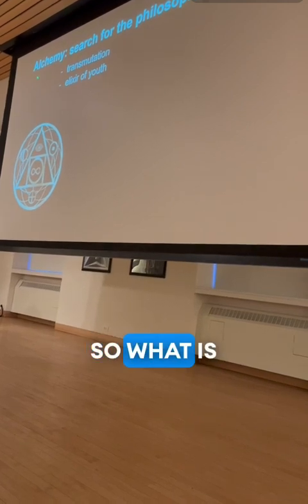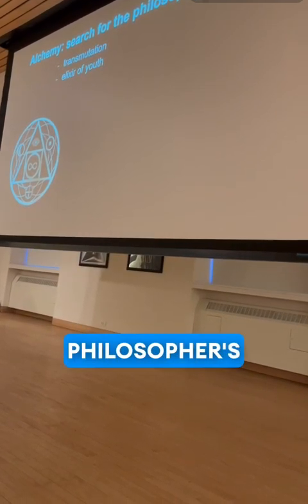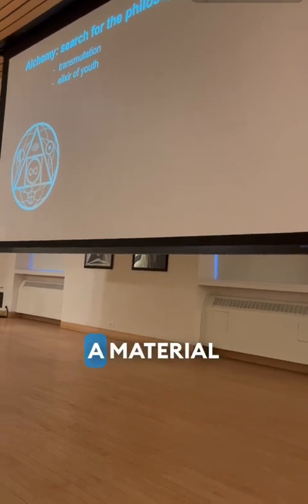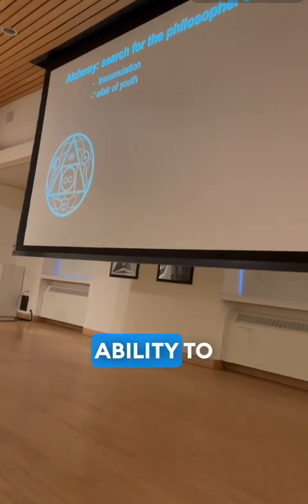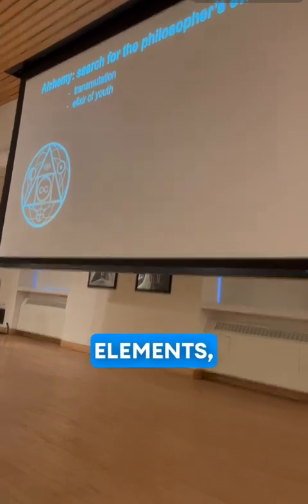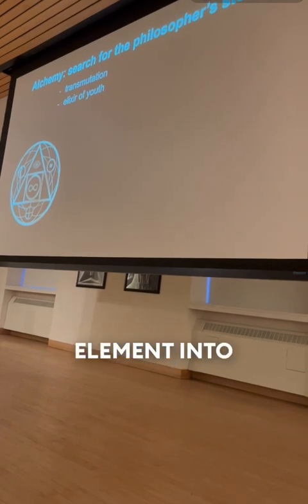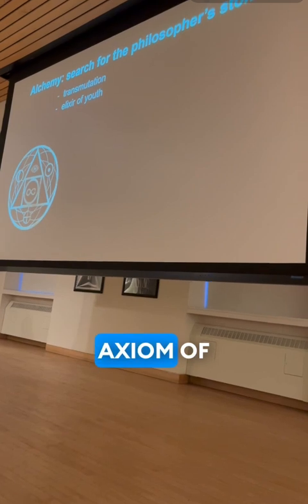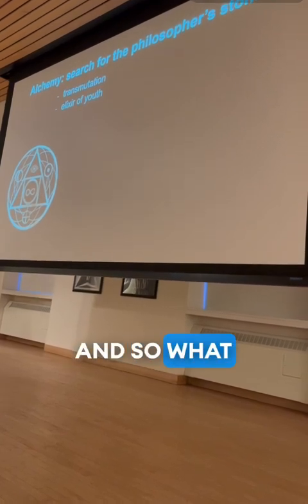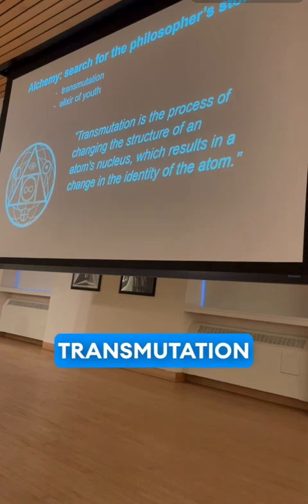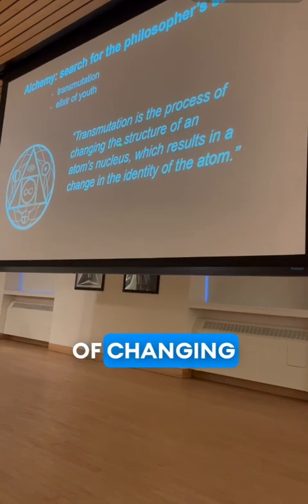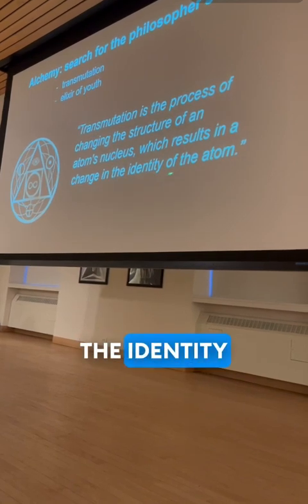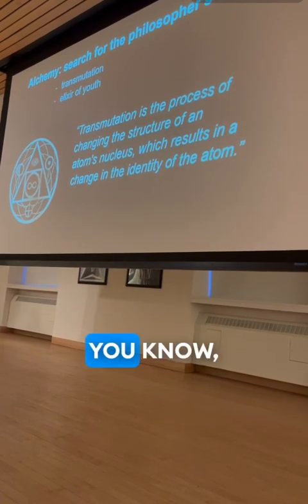What is alchemy? Alchemy is the search for the philosopher's stone, described as a material that has the ability to transmute elements—turn one element into another—and that can serve as an elixir of youth. Transmutation is described as a process of changing the structure of an atom's nucleus, which results in a change in the identity of the atom. It sounds very opaque, but it's not something that doesn't happen.